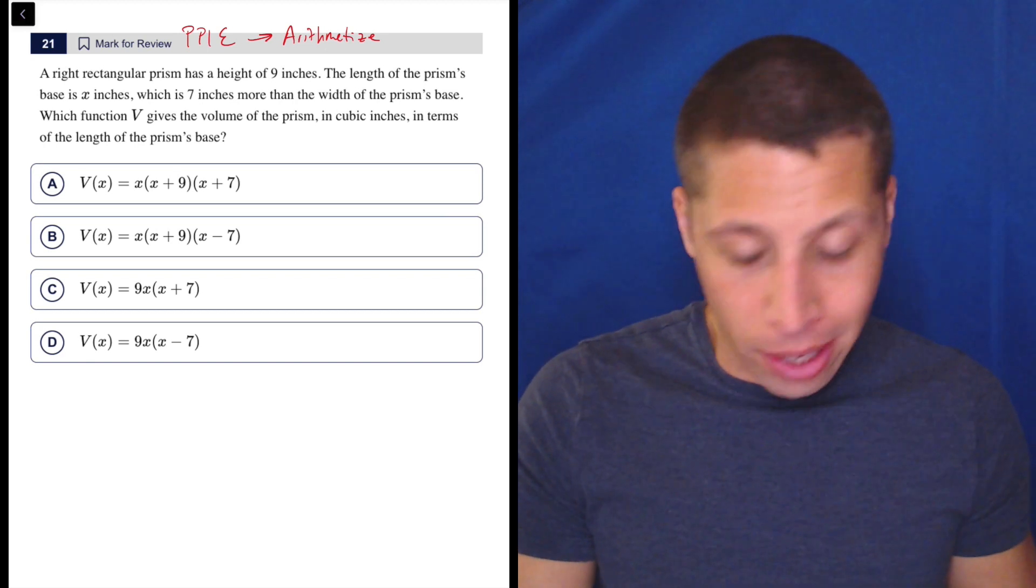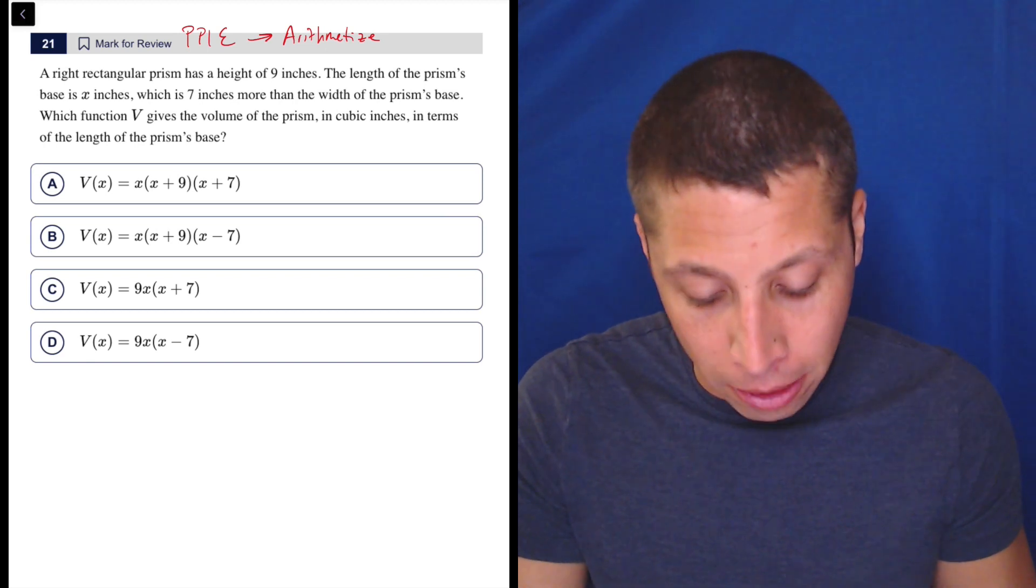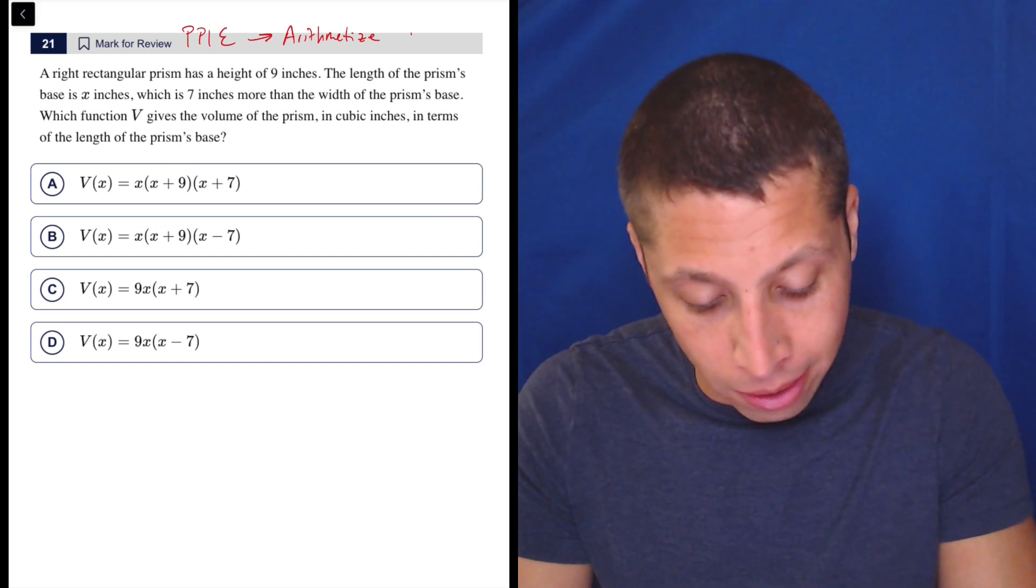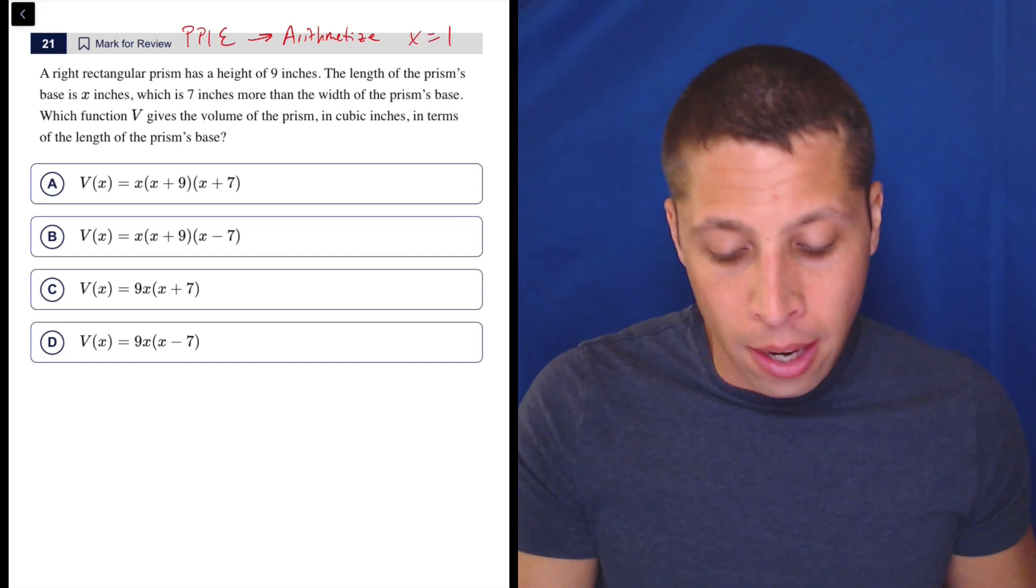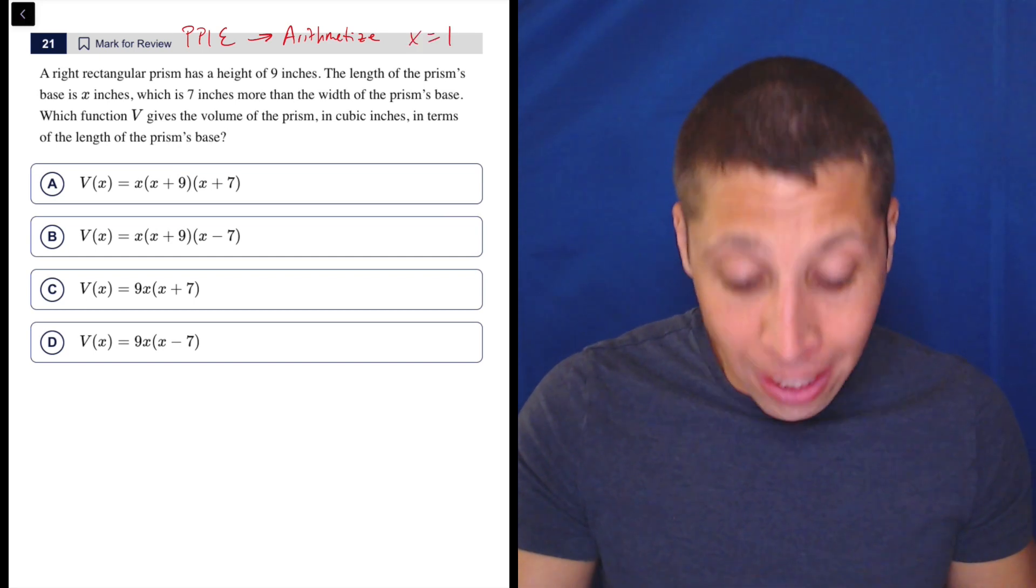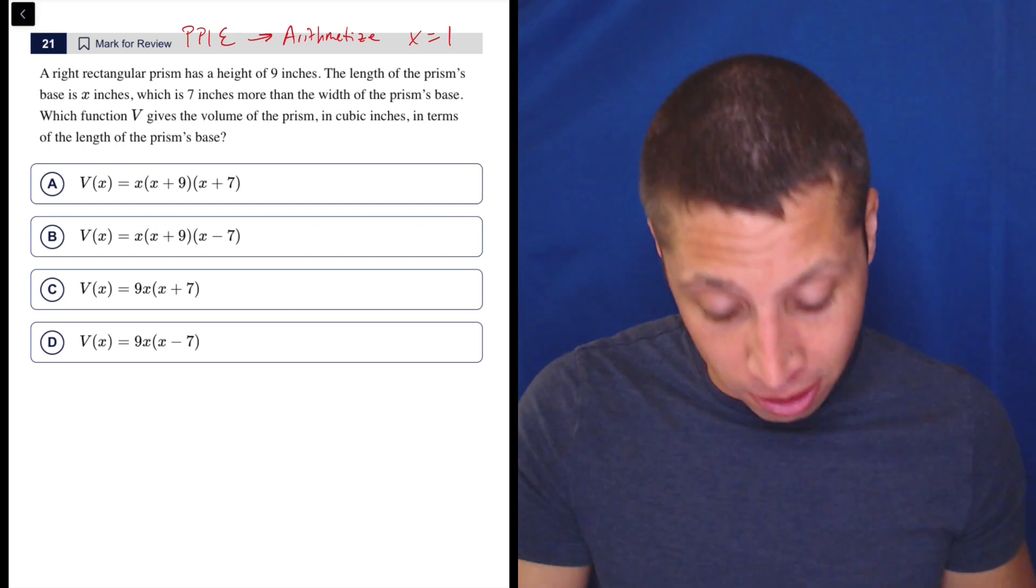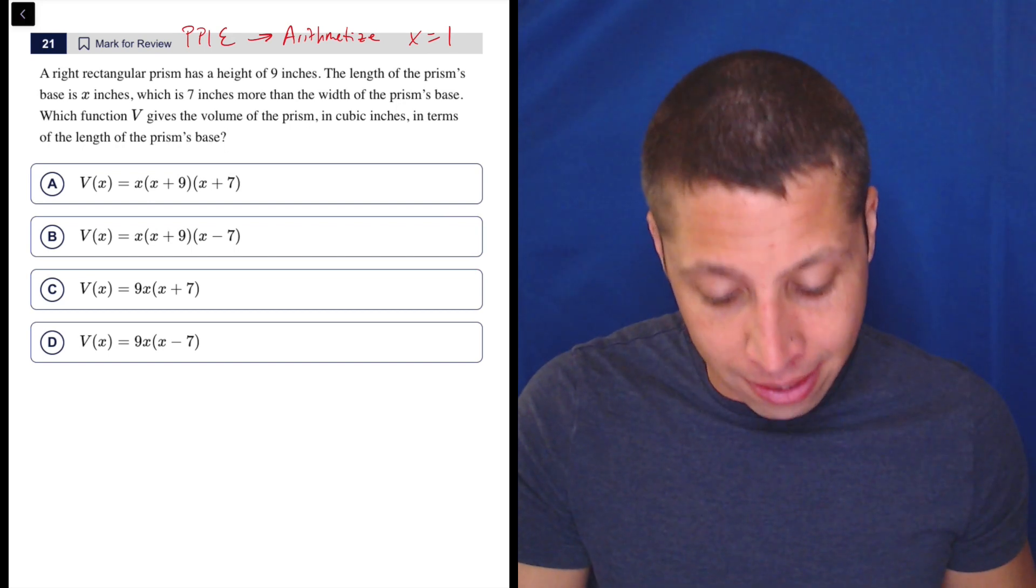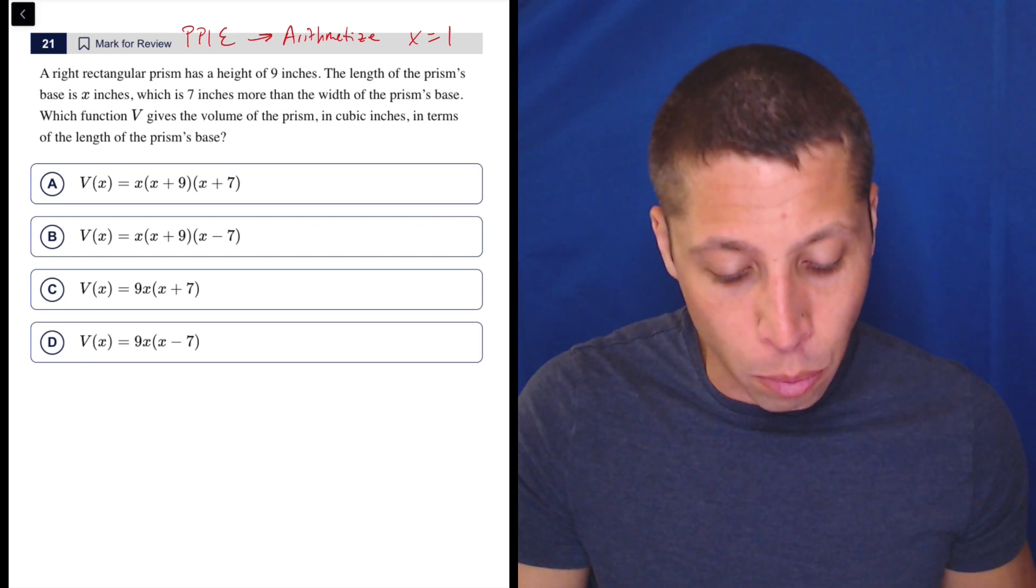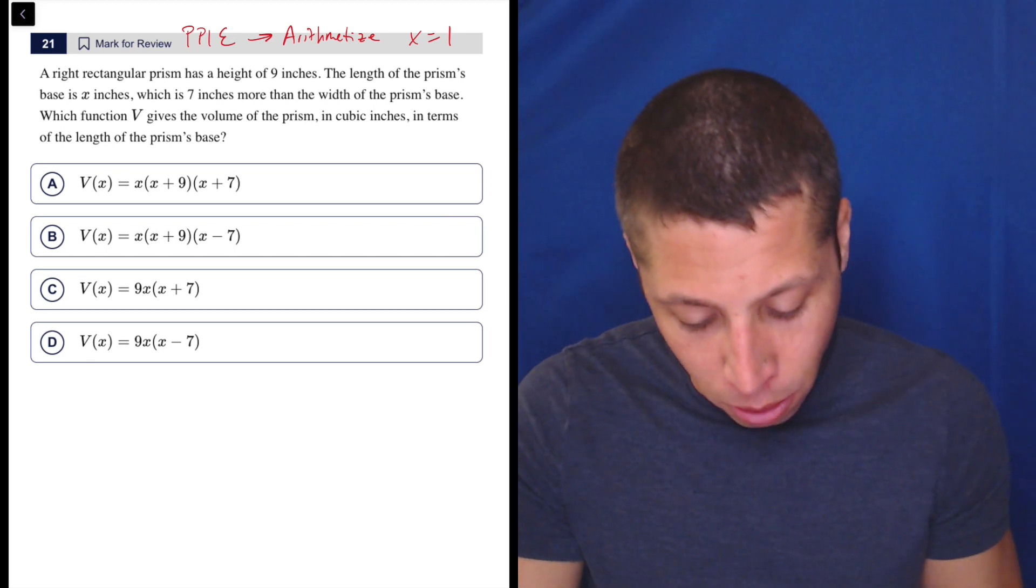So I forget exactly what I did the first time I did it, but I do remember kind of messing up a little bit. So I said something like, okay, what if X were just like one, right? All right, so a right rectangular prism has a height of nine inches.